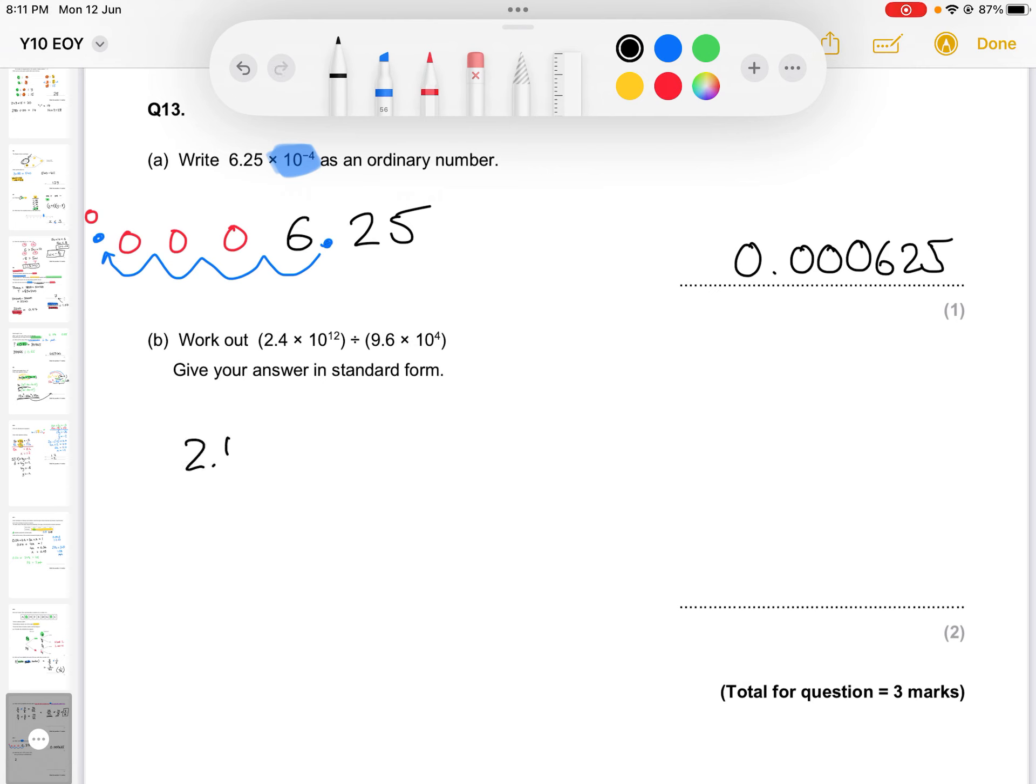If you do that, you are going to get 25 million. So a 2, 5 followed by six zeros.